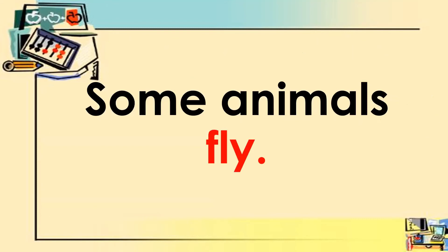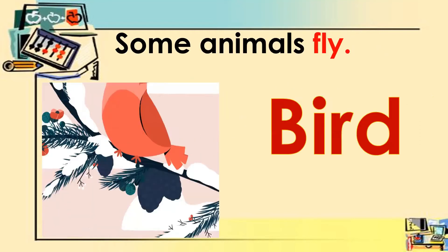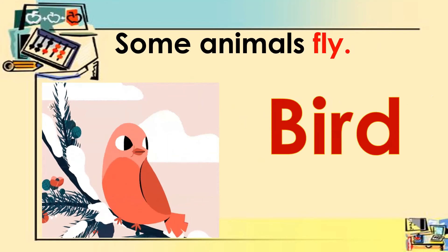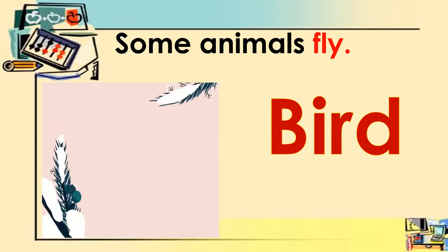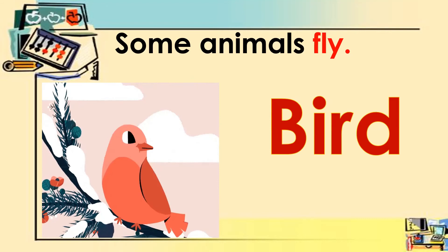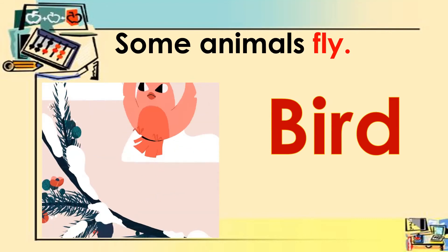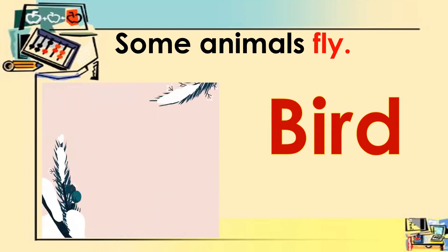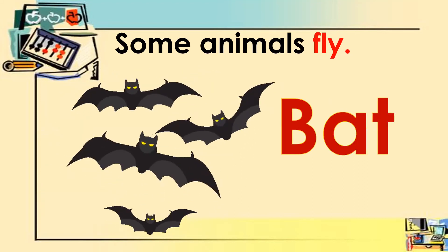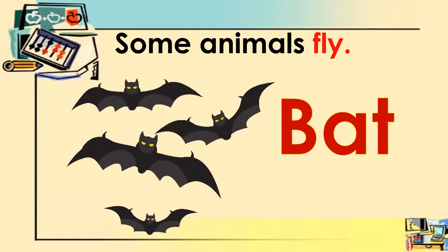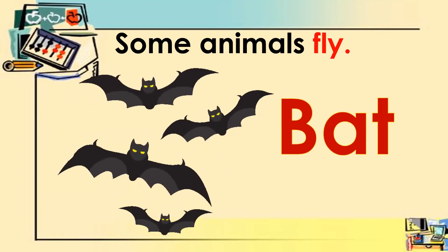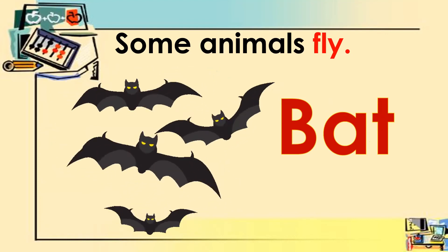Some animals fly. Let's look at some animals that fly. First we have bird — the bird is flying. Let's spell the word bird: B-I-R-D, bird. Next, an animal that flies is bat. The bat is flying. Let's spell the word bat: B-A-T, bat.